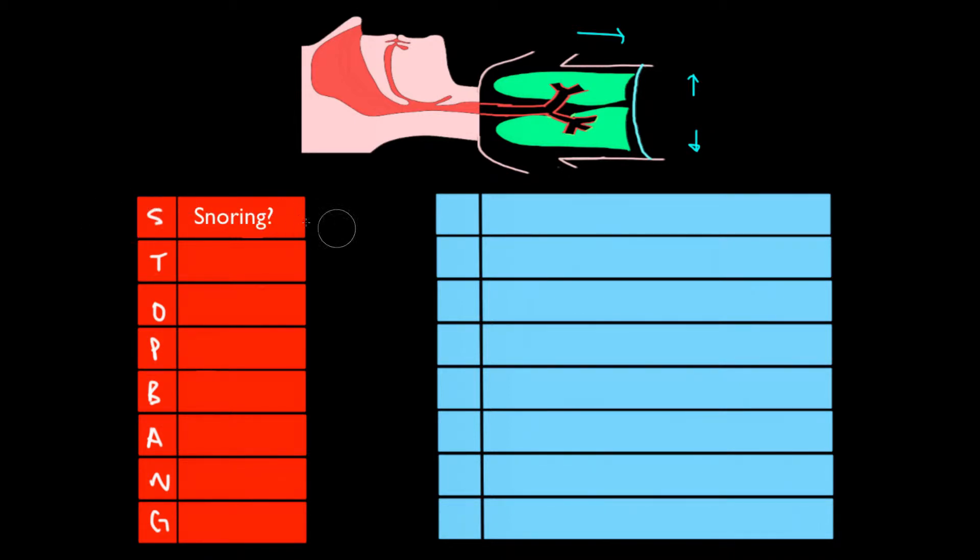Does this person snore really loudly, maybe even loudly enough to be heard through doors or walls? The T stands for tired - is this person tired during the day, which would make sense if they keep waking up during the middle of the night. O stands for observed - has this person been observed to stop breathing during their sleep? This might be something that could be answered by a sleep partner better than the person themselves. P stands for blood pressure - does this person have high blood pressure, or are they taking medication to treat high blood pressure? The B stands for having a BMI greater than 35.